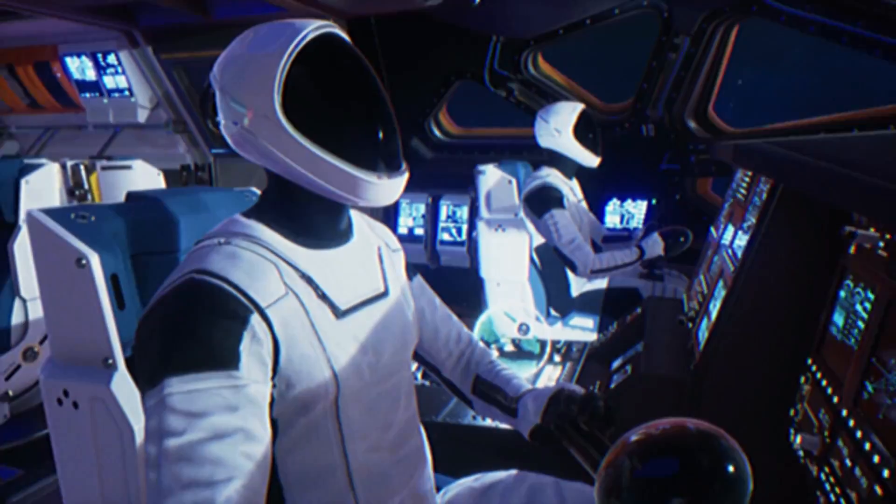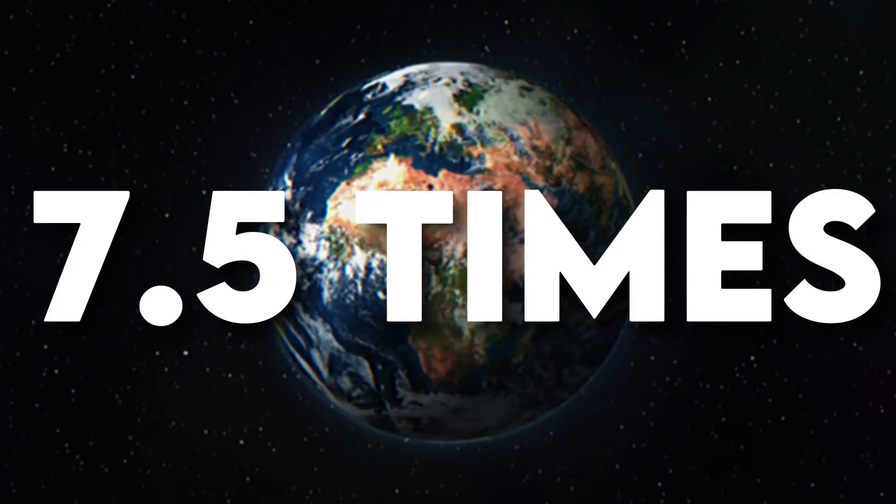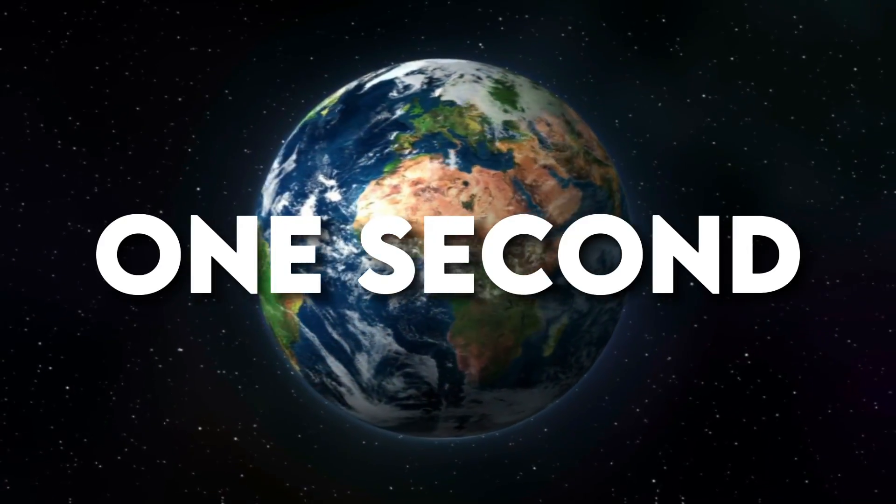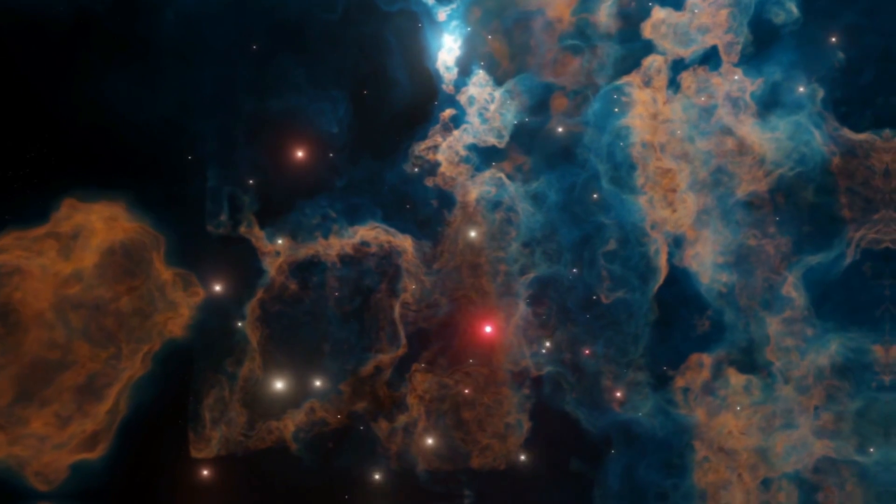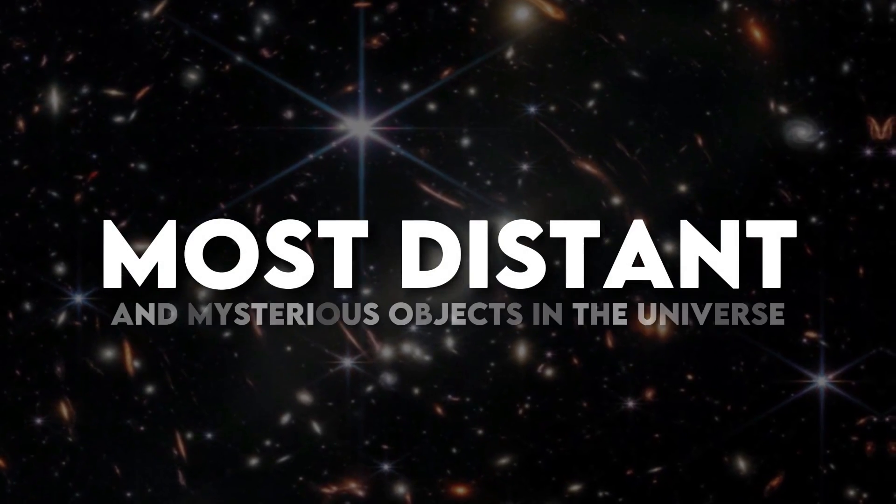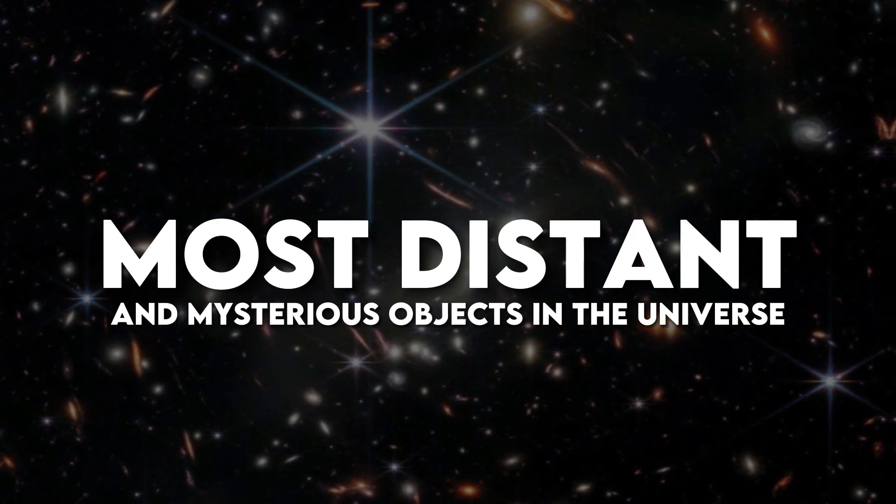Did you know that if you could travel at the speed of light, you could circle the Earth's equator about 7.5 times in just one second? That's how fast light travels, and it's thanks to light that we can observe some of the most distant and mysterious objects in the universe, like galaxies.